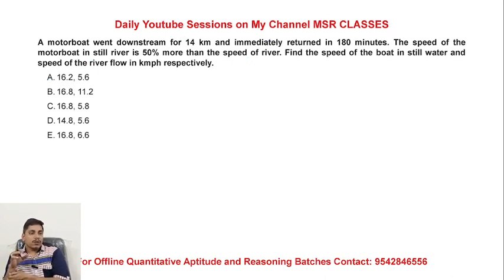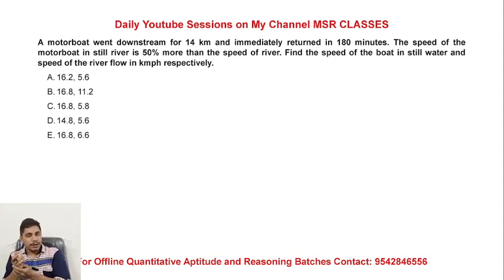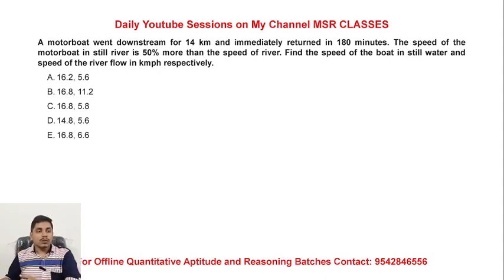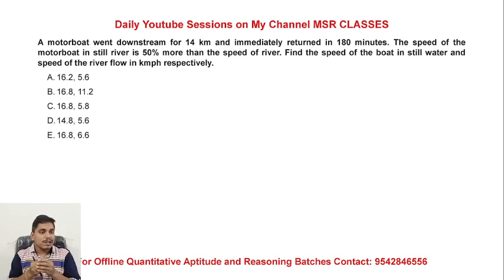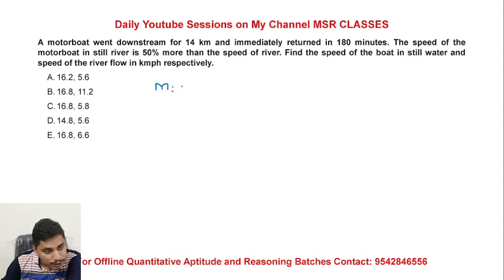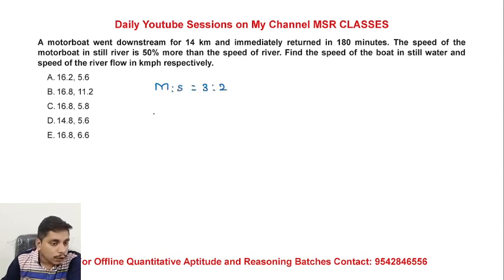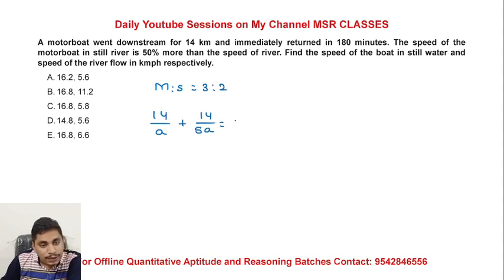A motorboat went downstream for 14 kilometers and immediately returned — total time 180 minutes. The speed of the motorboat in still water is 50% more than the speed of the current. So M to S ratio is 3 to 2. 14 km upstream and 14 km downstream — total time is 3 hours.